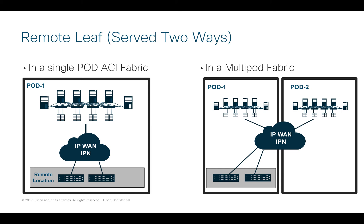In the example on the right, if you have a multi-pod fabric with pod 1 and pod 2, and you want to extend remote physical leaves as part of pod 1, you can make it such that any endpoint regardless of where it's connected — pod 1, pod 2, or remote site — can all reach each other.